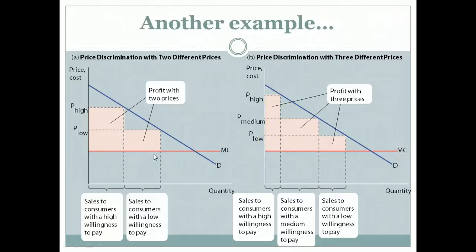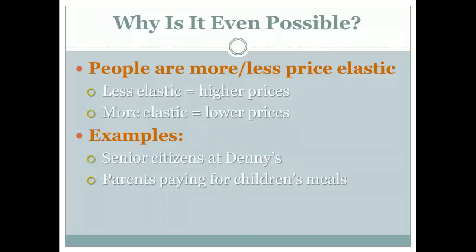So how is it even possible for a monopolist to charge a different price for different groups? It boils down to a couple of things. One is that people's price sensitivity is either more or less elastic. The less elastic people's demand is, the more able a monopolist is to charge a higher price for them. And the more elastic your demand, they'll lower their price. So what they're trying to do is basically find that price point for each group and charge the maximum price that group is willing to pay.